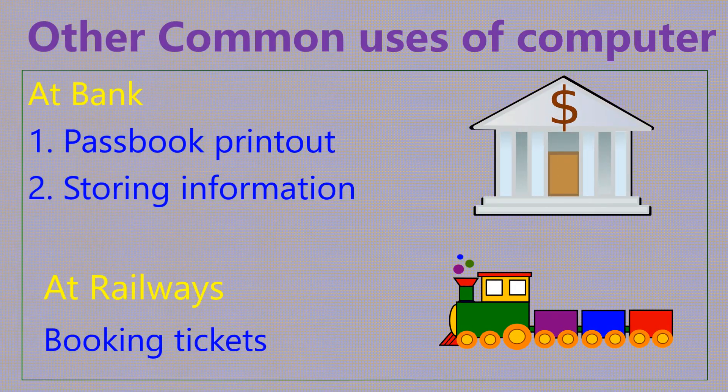At the bank, the computer is used for passbook printouts and storing information. At railways, the computer is used for booking tickets.